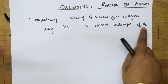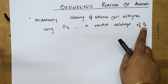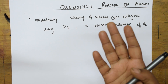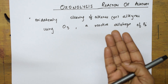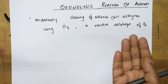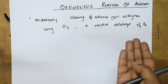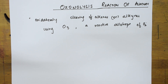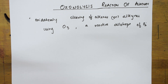Allotrope means the same element existing in two or more forms. For carbon, diamond is an allotrope, graphite is an allotrope, and Buckminster fullerene is an allotrope. Similarly, ozone is an allotrope of oxygen and also occurs naturally. We will discuss that topic also.